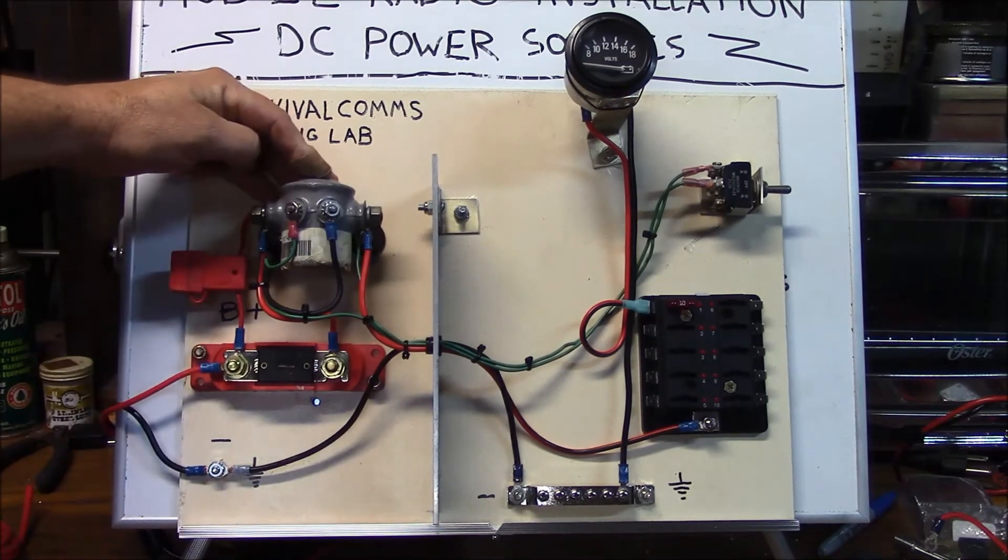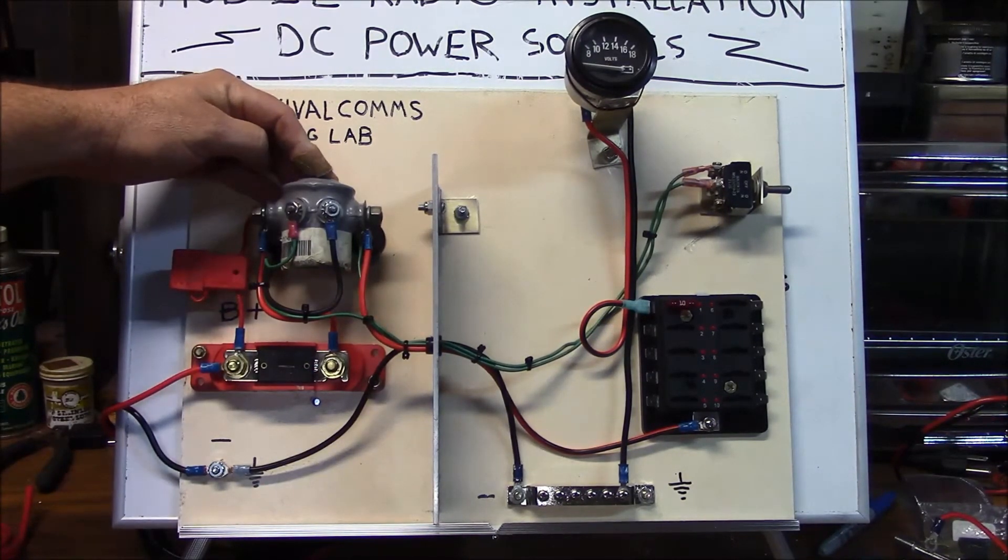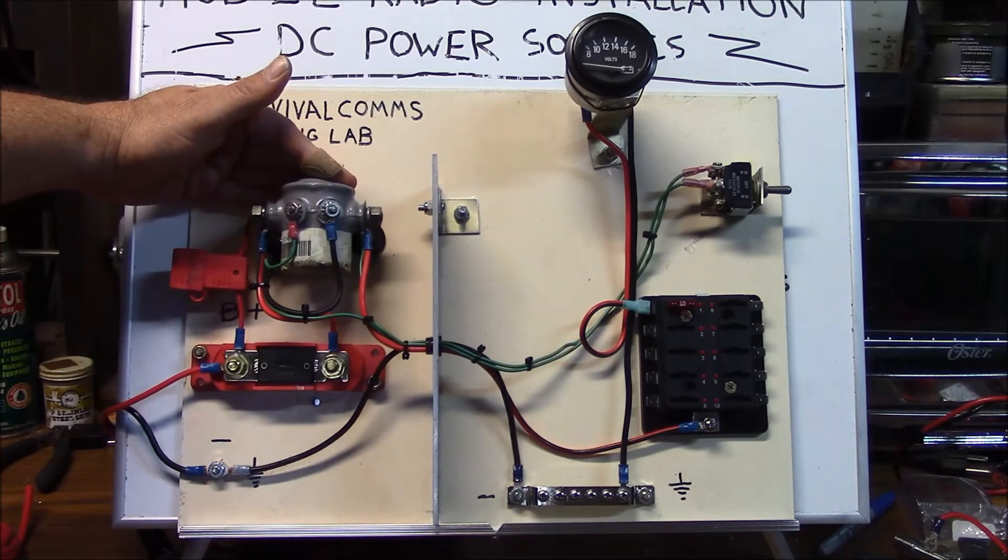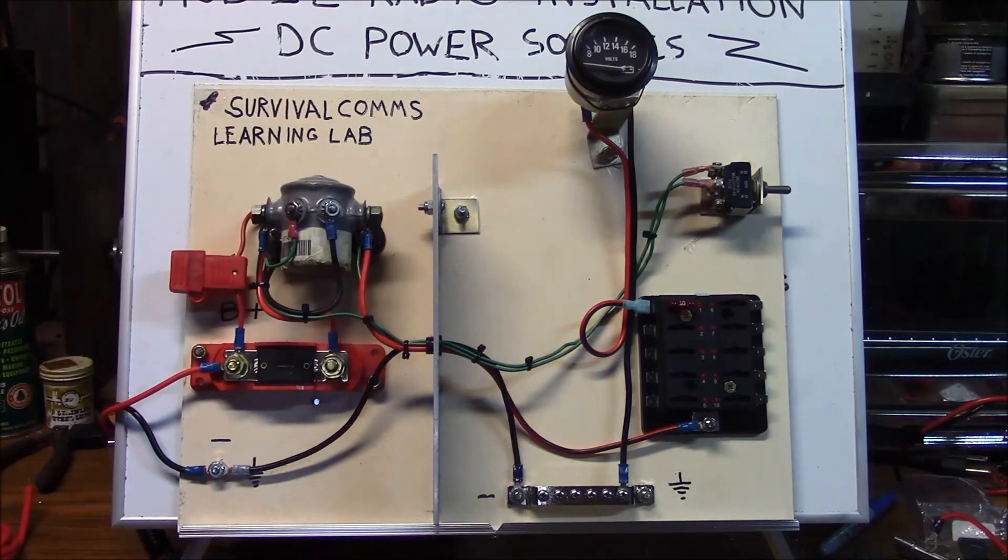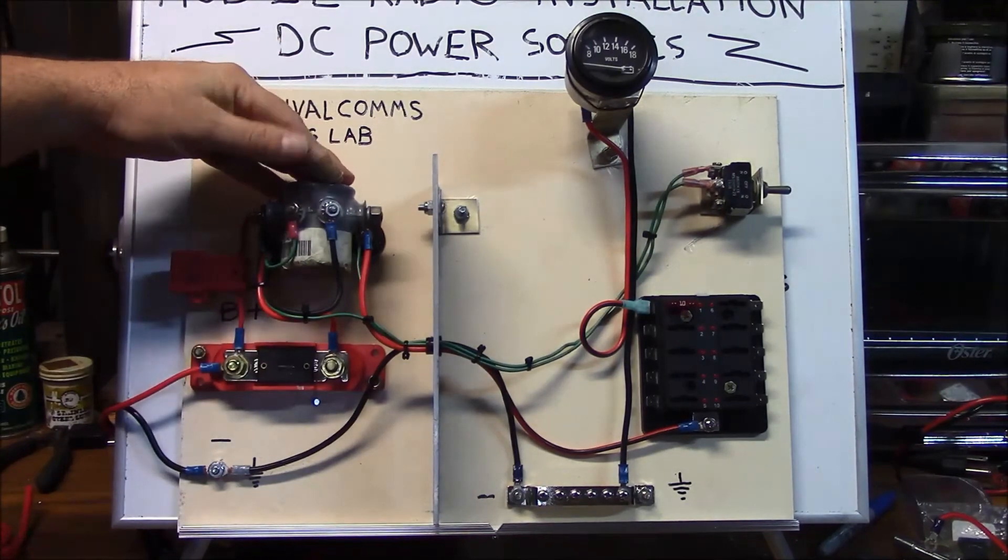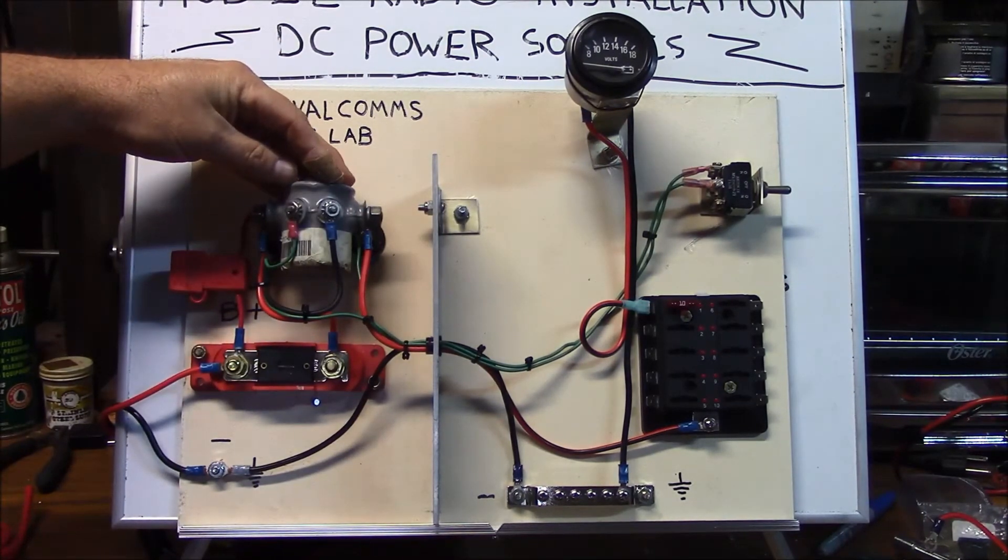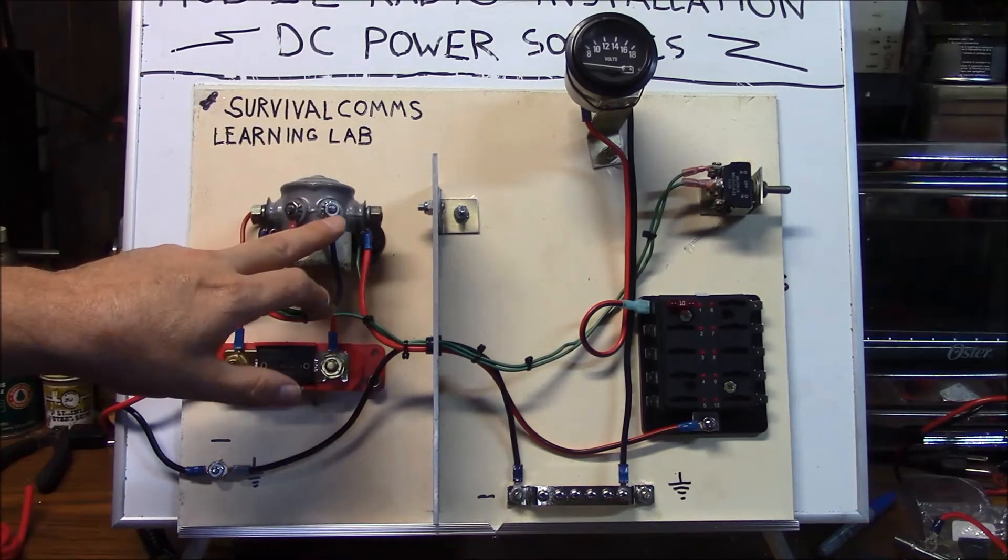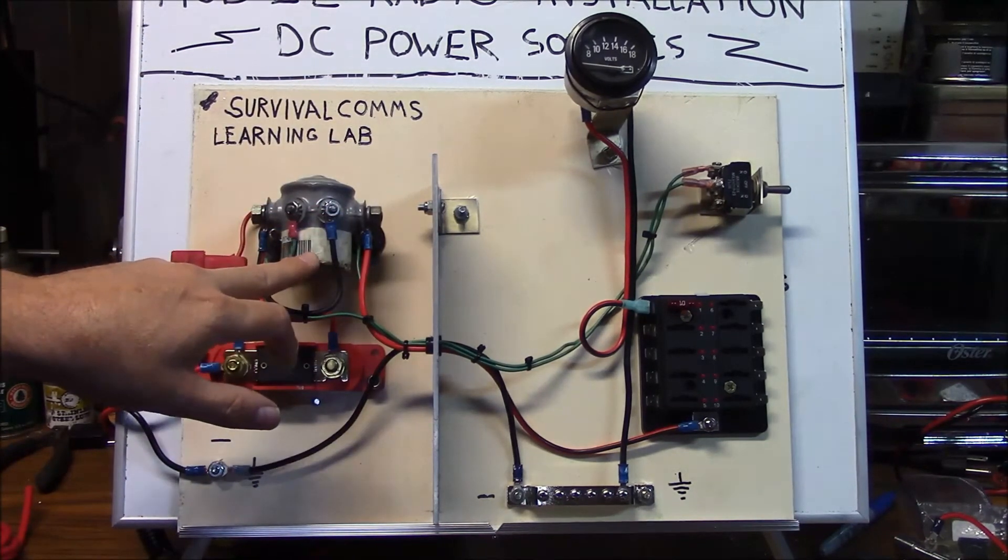The relay I'm using here is a 100 amp continuous duty solenoid. Now when using a master relay type of arrangement, you want to size your master relay to be of 20% more carrying capacity than your total load. This particular example has four terminals. And when you see four terminals, that generally indicates that the ground side of the coil is insulated from the body of the solenoid or relay.